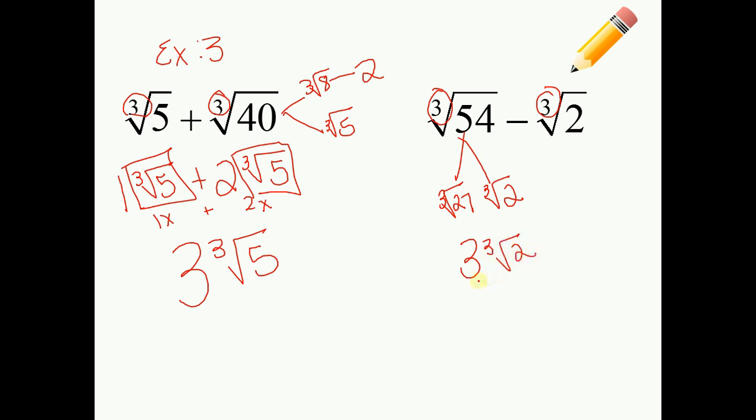So, that is three cube roots of two minus one cube root of two. Just putting a one there so I can see it. Now, I'm at like radicals. So, now I'm just gonna subtract the coefficients, the number in the front. So, I'll be two cube roots of two for my final answer.